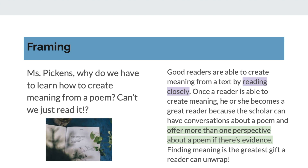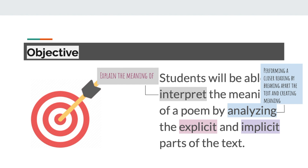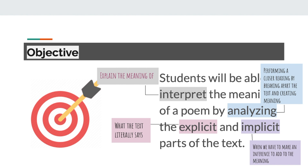Our objective for today is: students will be able to interpret the meaning of a poem by analyzing the explicit and implicit parts of the text. Let's deconstruct that objective. To interpret means to explain the meaning of. Analyzing is when you perform a closer reading by breaking apart the text and creating meaning. The explicit is what the text literally says, while the implicit is when you have to make an inference to add to the meaning.